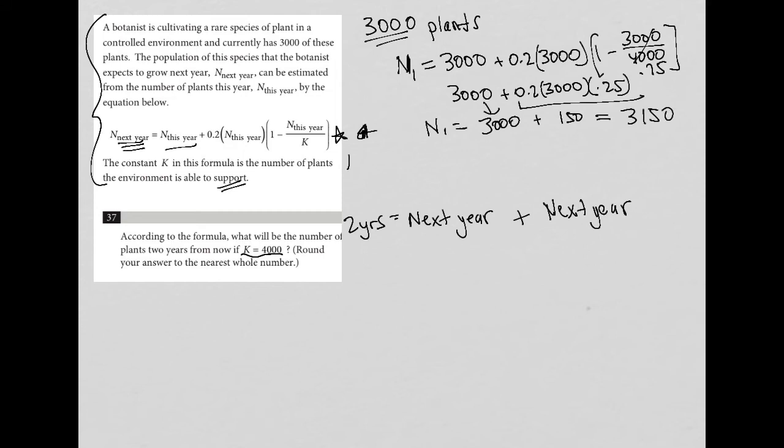All right, so then to find two years from today, then I'm going to say, well, that would be like doing this process twice, like I mentioned before. So now my number is no longer 3,000. It's going to be 3,150 right here. So N2 equals 3,150 plus 0.2 times 3,150 times 1 minus 3,150 over 4,000.